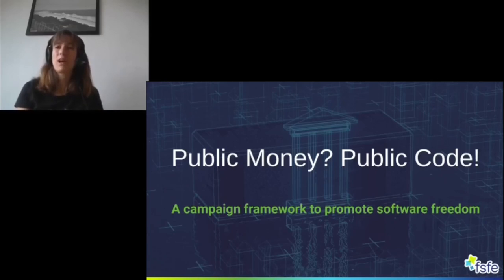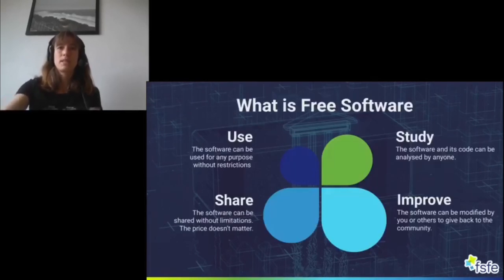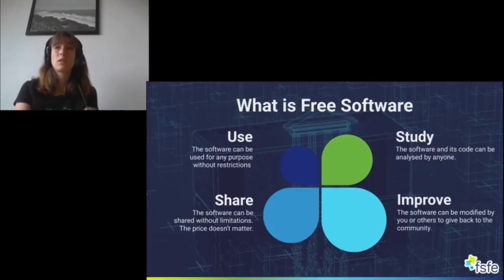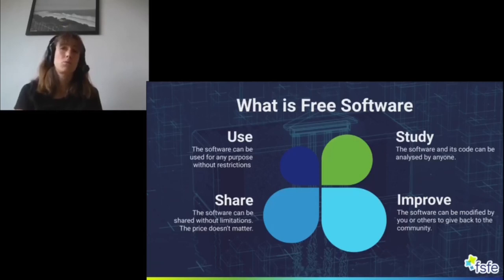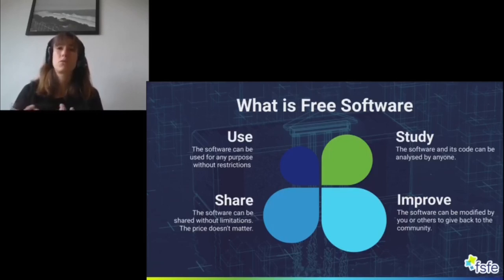So first of all I will begin with what is free software, as this is one of the basics. Free software means software that is published under a free and open source software license. Every free and open source software license includes the four freedoms — there are many free and open source software licenses out there, but the important thing is that all of those have granted four freedoms.